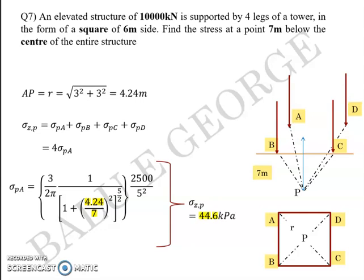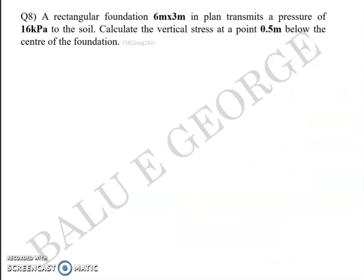Next question: a rectangular footing 6 meters by 3 meters in plan transmits a pressure of 16 kilopascals to the soil. You are asked to calculate the vertical stress at a point 0.5 meters below the center of the foundation. Now this question I leave to you to submit as an assignment. If there's some trouble that you face, if there's some clarification that you require, you can just let me know. I shall be happy to offer my help, but nonetheless just give it a try if you can solve it on your own.